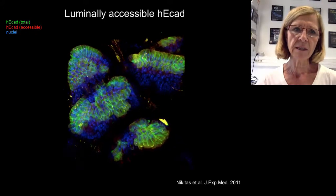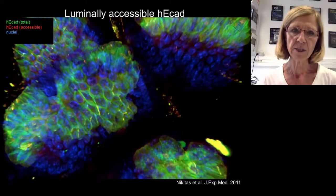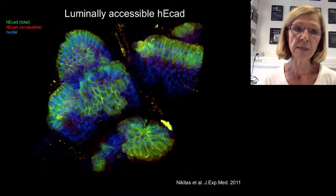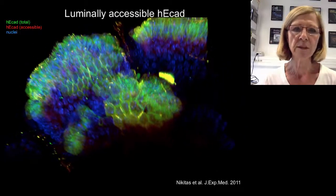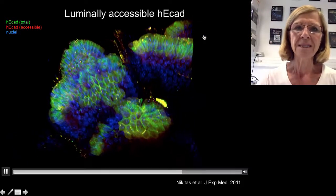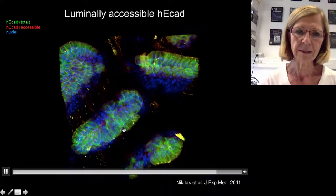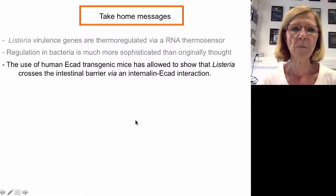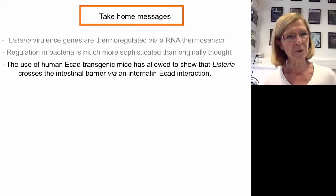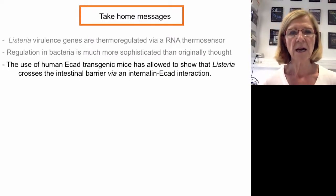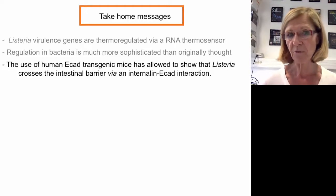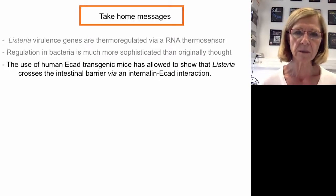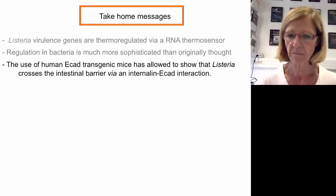Some might think that E-cadherin engaged in E-cadherin–E-cadherin interactions at the intestinal epithelium would not be accessible to bacteria. My colleague Marc Lecuit and his student Jorgos Nikitas showed that is not the case — E-cadherin is luminally accessible to bacteria inside the intestine. My third message is that the use of human E-cadherin transgenic mice has demonstrated that Listeria crosses the intestinal barrier via an internalin–E-cadherin interaction, the first time transgenic mice were used to demonstrate a specific step of bacterial infection.